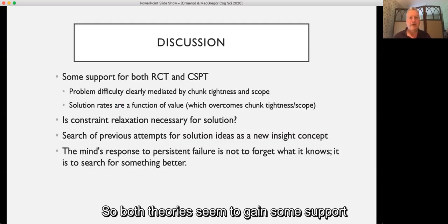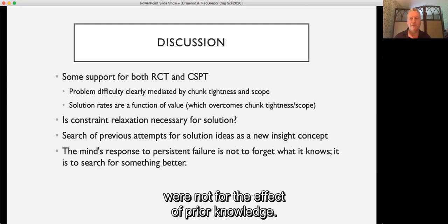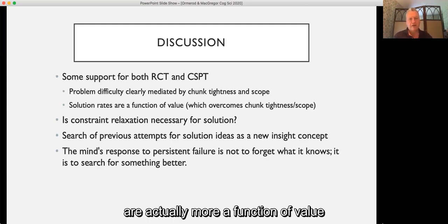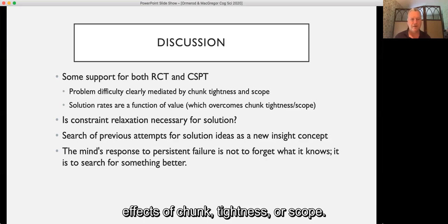So both theories seem to have gained some support from these experiments. In this instance, problem difficulty is clearly mediated by chunk tightness and scope. These wouldn't be insight problems were it not for the effect of prior knowledge. But we argue that solution rates are actually more a function of value than of their initial difficulty. And it's the value that participants are using to cue their move selections. And those value changes are overcoming effects of chunk tightness or scope.